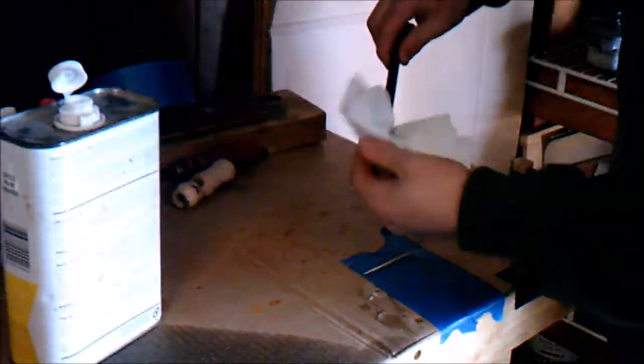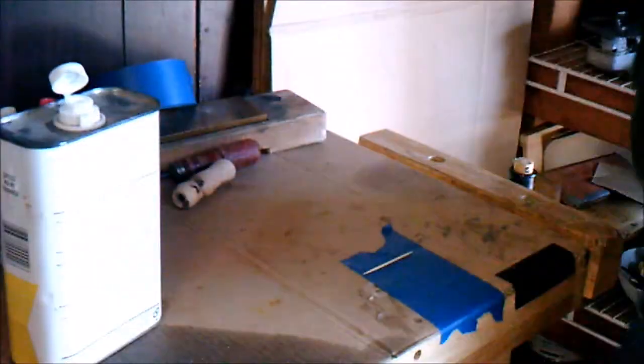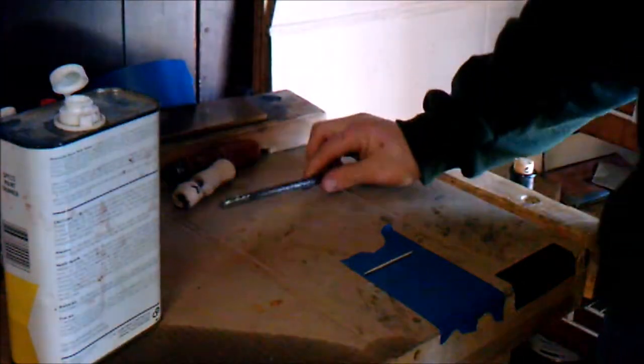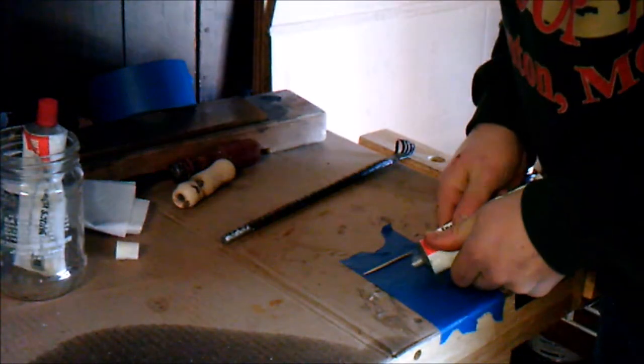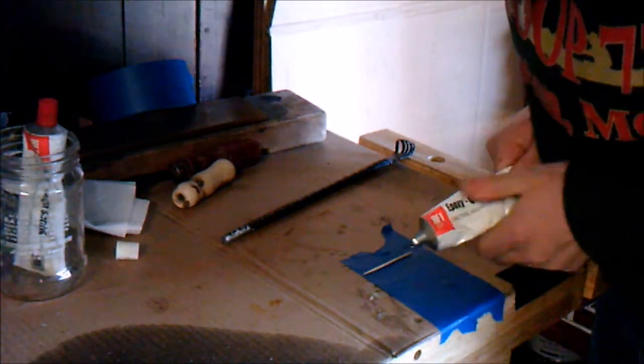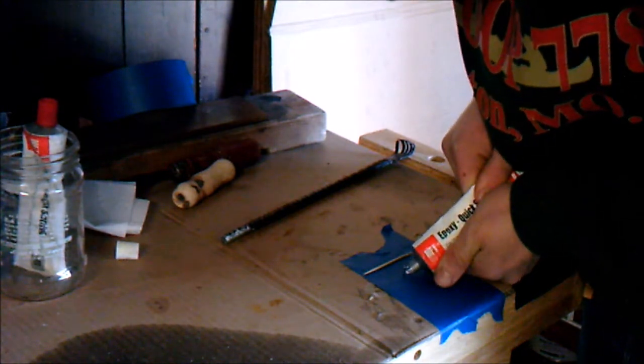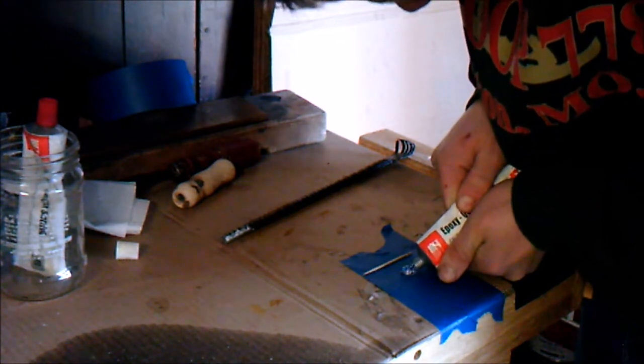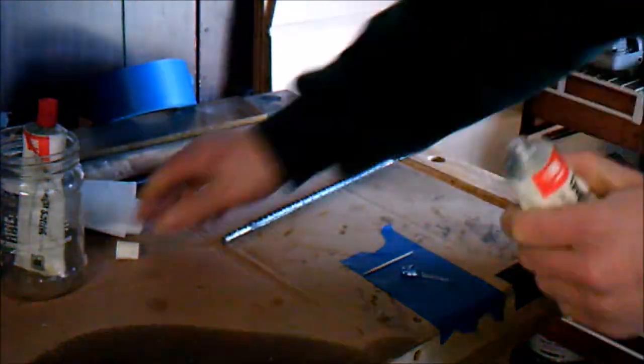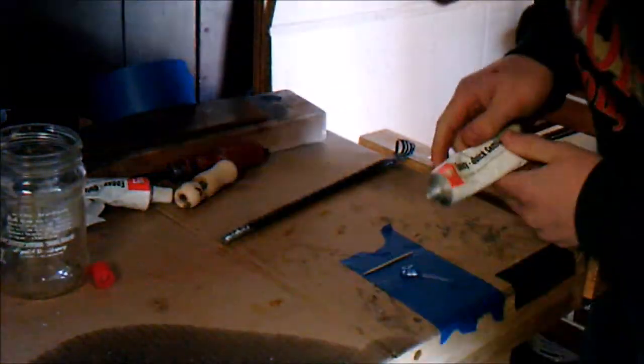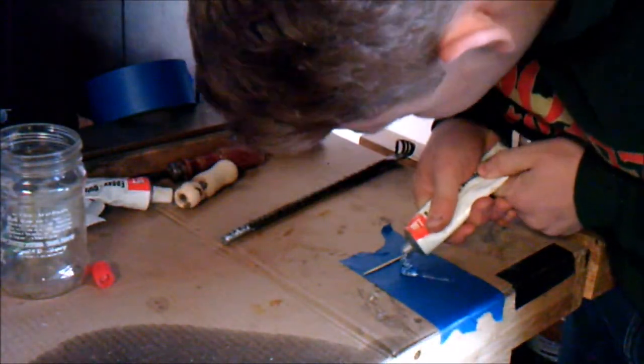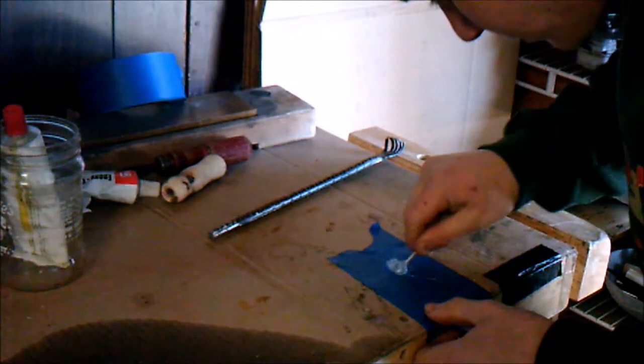Now before we start the glue up, we want to clean off the tang of our back scratcher with some mineral spirits. That's gonna make sure there's no oil or grease left on there from our hands, that way the epoxy that we'll be using bonds to nothing but bare metal. I'm using some two-part epoxy from Harbor Freight and it was a little bit frozen, so once I mixed it up and glued the tang in the handle I brought it inside to cure the rest of the way.